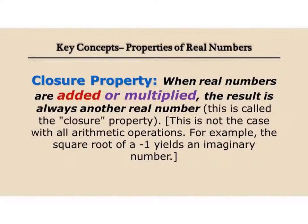Basically the closure property says when you take two real numbers and you add them or multiply them, the answer is a real number. The only example of when it's not, and we'll get into this later on, is if you take the square root of negative 1, you get an imaginary number.